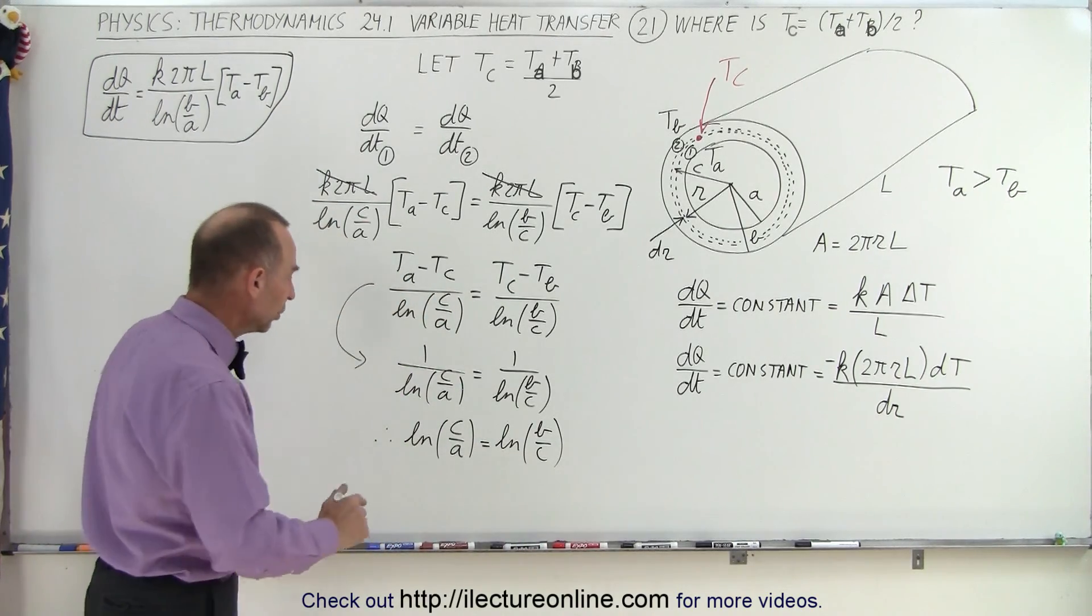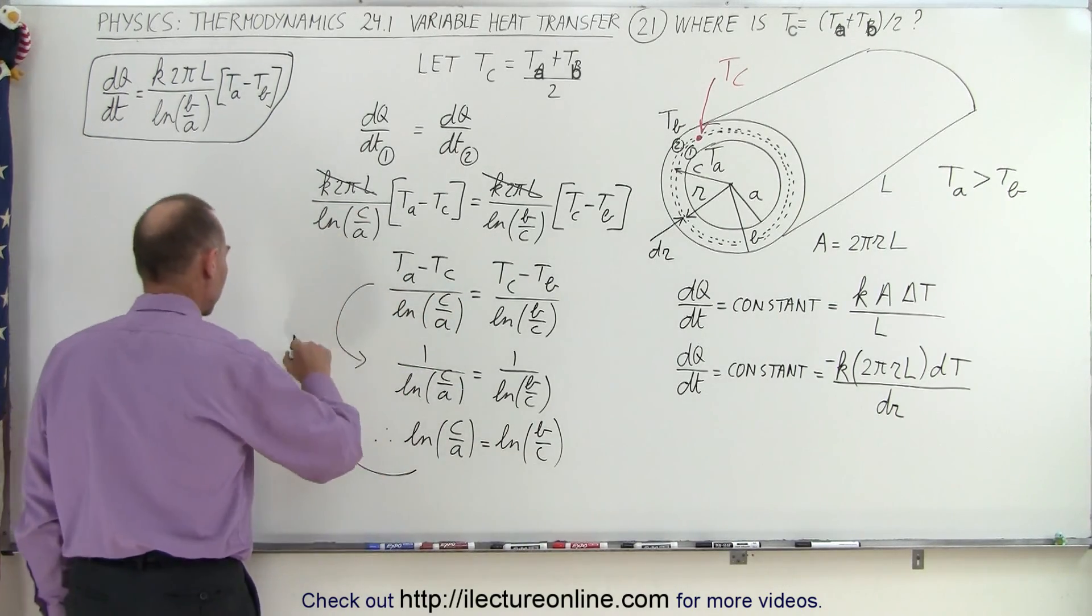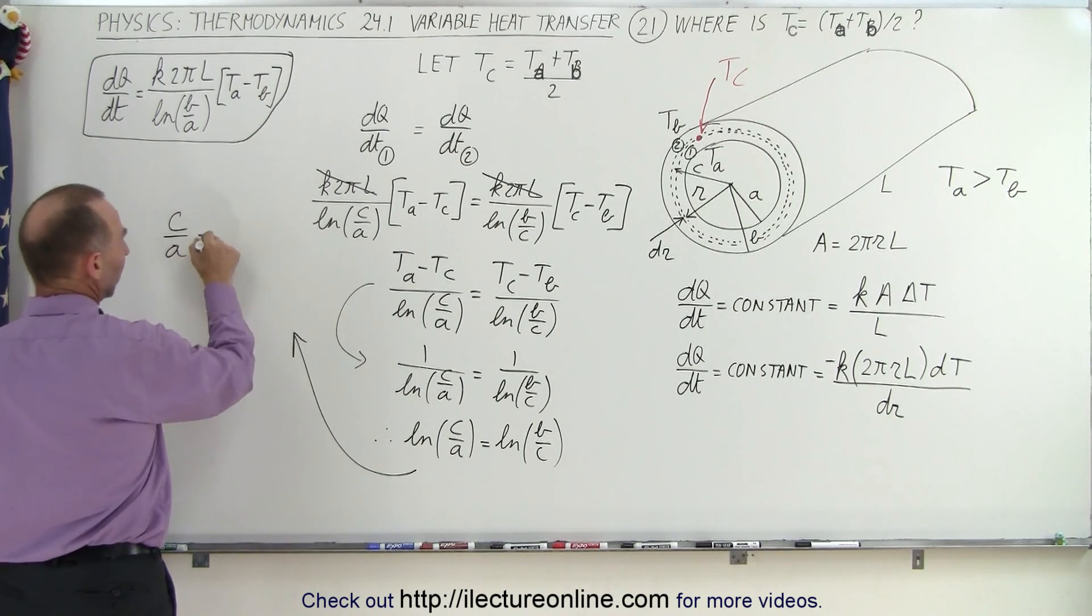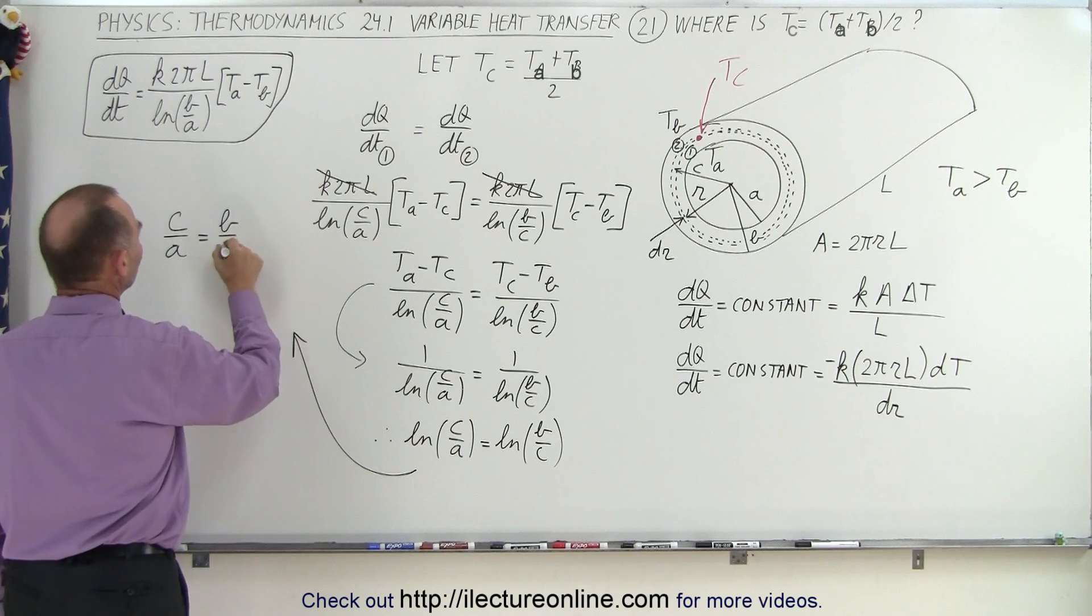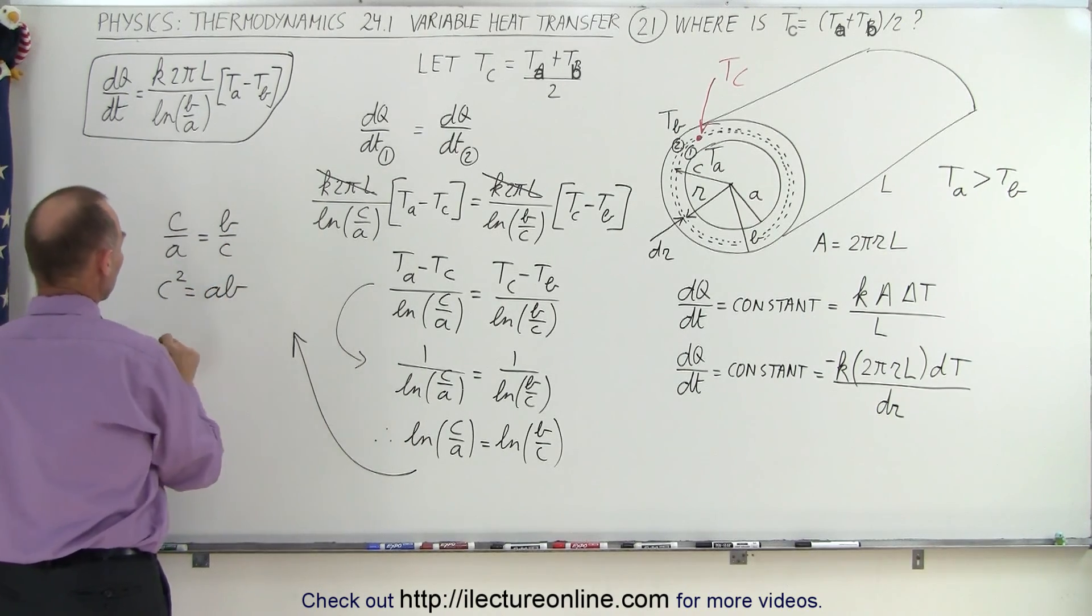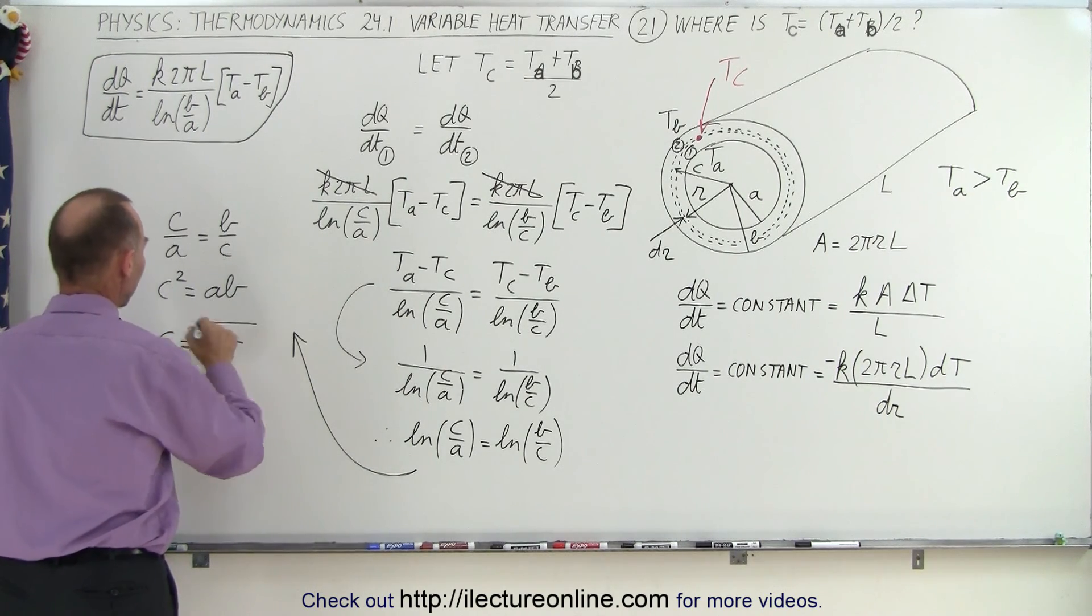Of course, if that's true, then we can conclude, come over here, that C over A must equal B over C, which means that C squared is equal to A times B, which means that C must therefore equal to the square root of A times B.